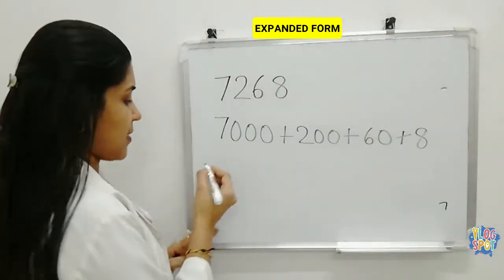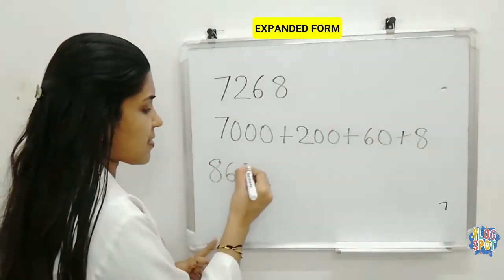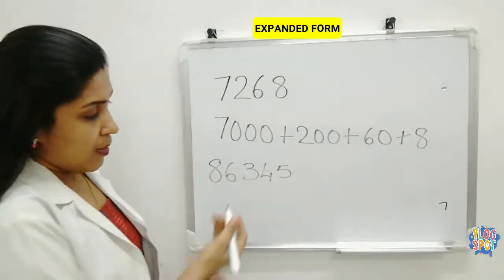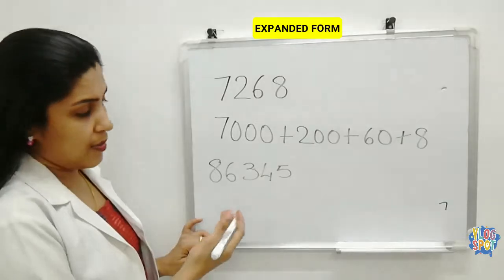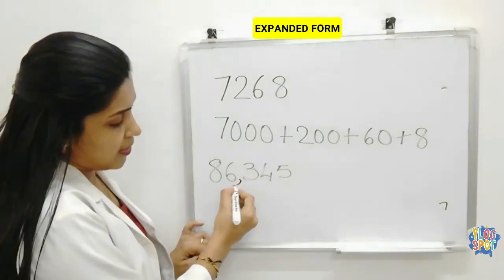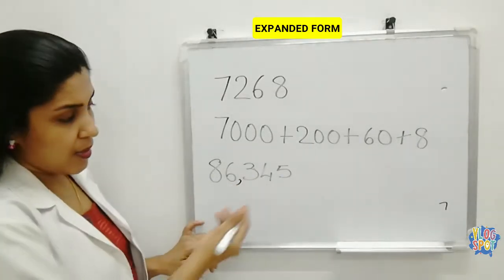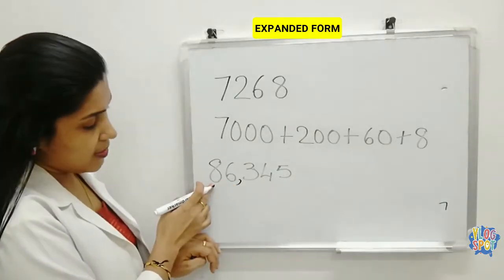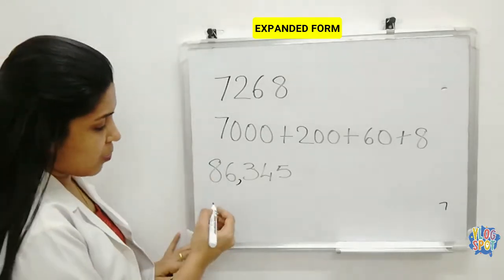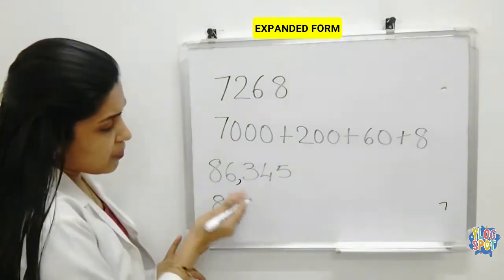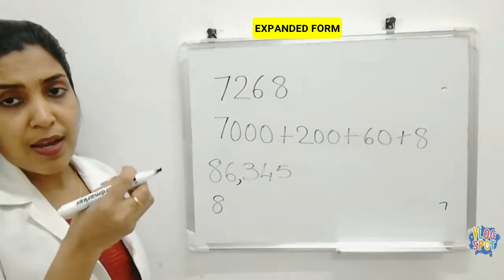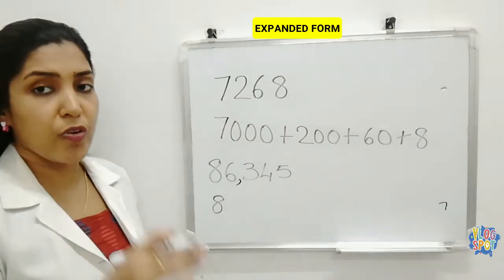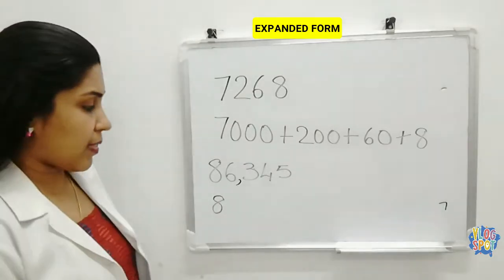We can go for the next example: 86,345. Before going for the expanded form, we can divide the number using a comma. So after the first period we can keep a comma, making this 86,000. And 8 is in the ten-thousands place. Sometimes for bigger digits we will get confused — we might miss some zeros or keep extra ones. To avoid that, here is an easy method.